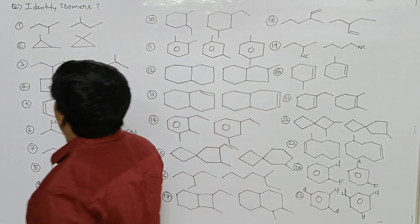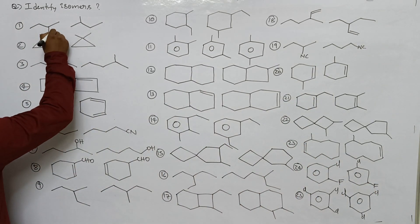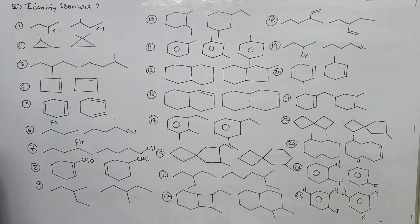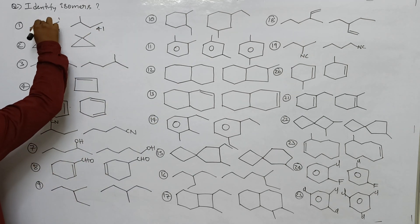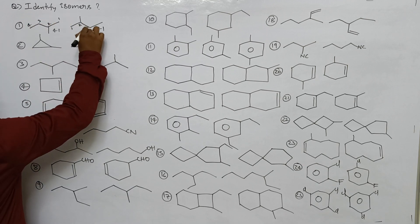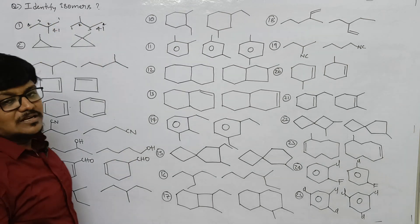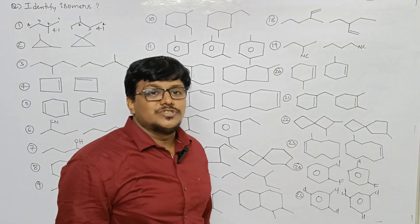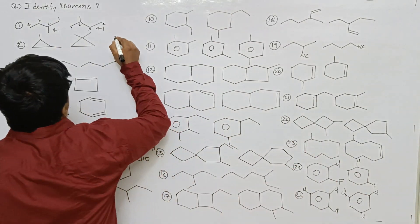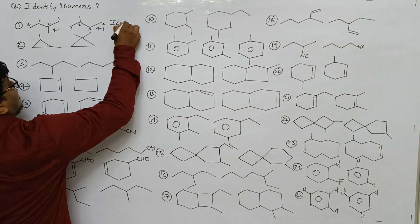First question: isomeric number one two three four — that is 41. Here also 41. Position one two three four, position one two three four. Isomeric number same, position also same. So these two are identical.